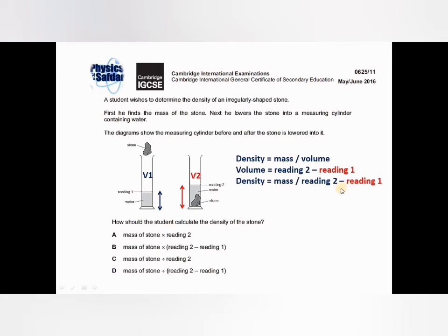Therefore, density equals mass over (reading 2 minus reading 1). In option A, mass of stone multiplied by reading 2 — that is not correct, there is a multiplication. Option B, mass of stone multiplied by (reading 2 minus reading 1) — again multiplication, not correct. Option C, mass of stone divided by reading 2 only — that's wrong. Option D, mass of stone divided by (reading 2 minus reading 1) — that is the right answer.